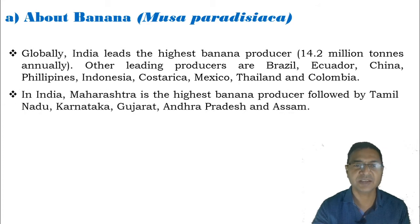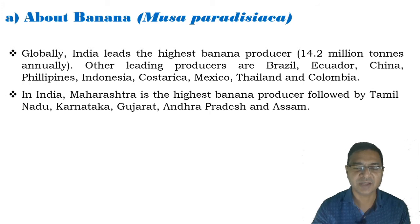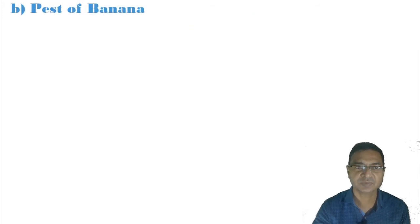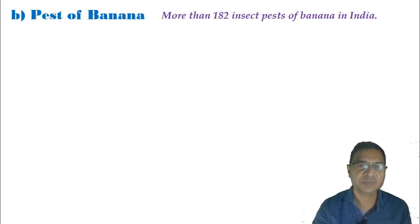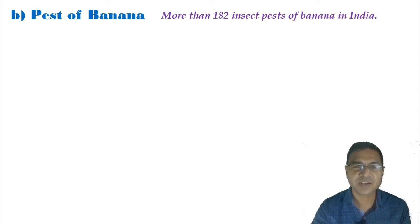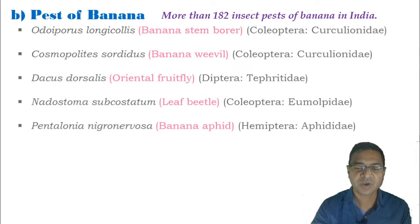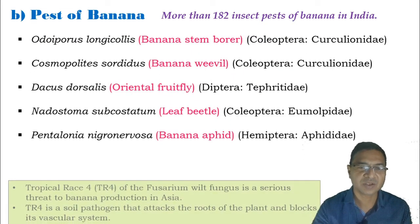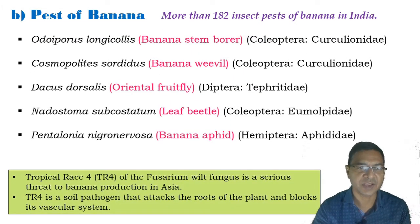Within India, Maharashtra is the highest banana producer, followed by Tamil Nadu, Karnataka, Gujarat, Andhra Pradesh, and Assam. Moving to the pests of banana, around more than 182 insect pests of banana have been observed in India.